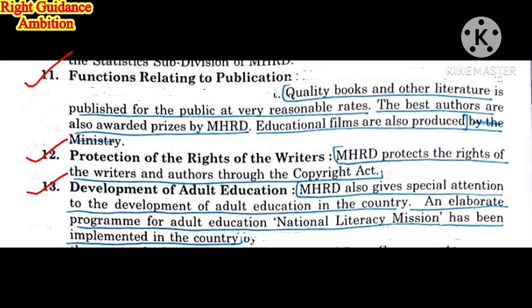The twelfth point is the protection of the rights of writers. MHRD protects the rights of writers and authors through the Copyright Act, ensuring that any writer's or poet's publication cannot be copied by others.